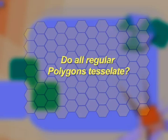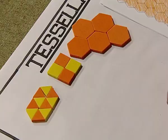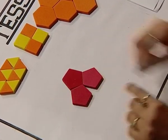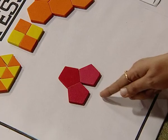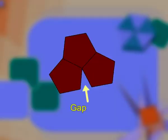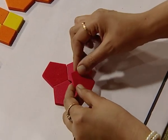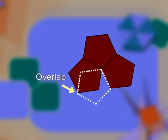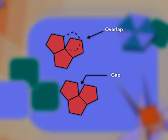So friends, after having explored these tessellations, the next natural question that arises is: do all regular polygons tessellate? Let us try to do the same thing with the set of pentagons. If we try to place these pentagons next to each other, on placing three pentagons, we observe that there is a gap which is left. If we pick up a fourth pentagon to try and fill this gap, we observe that there is an overlap that occurs, and therefore we can say that these pentagons are not tessellating.